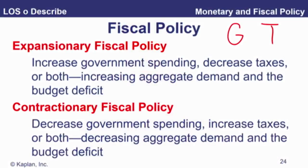Boost spending, cut taxes — that's expansionary. On the other hand, if you want to be contractionary, you cut spending and increase taxation. Now, the other important aspect: if we start to spend and cut taxes as a government, that's going to have an impact on the budget deficit. Expansionary policy will increase the budget deficit; contractionary should decrease it.